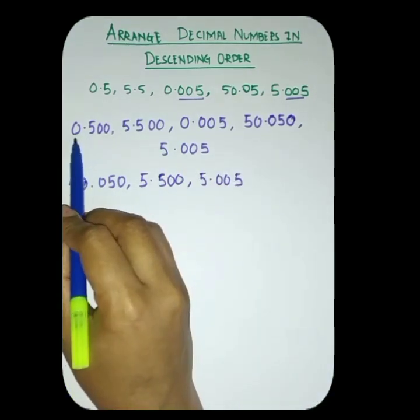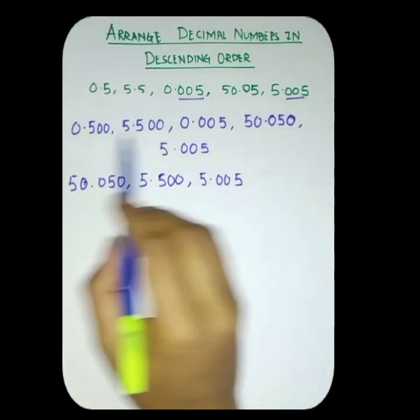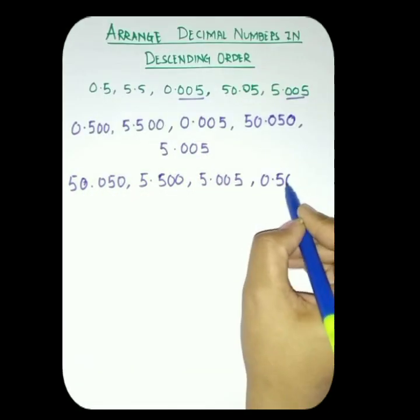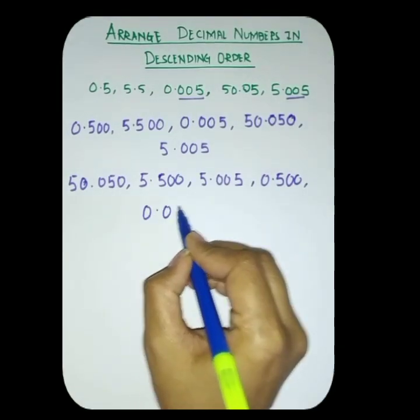Now we have two again, 0.500 and 0.005. So which will come first? 0.500, and the last would be 0.005.